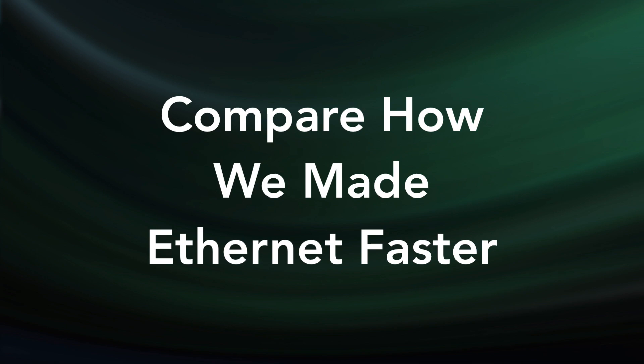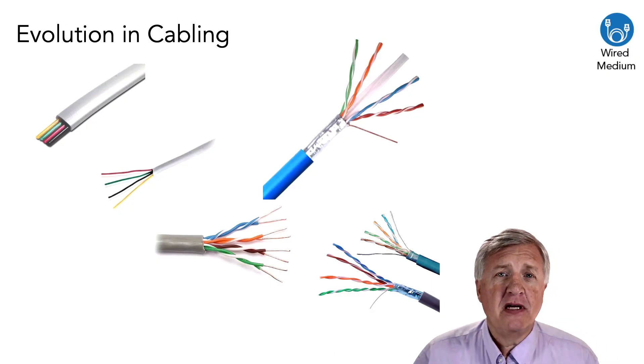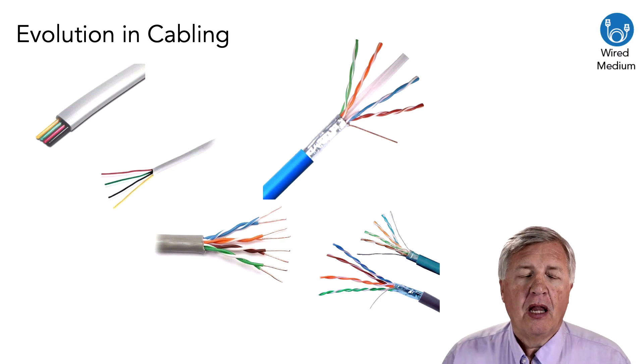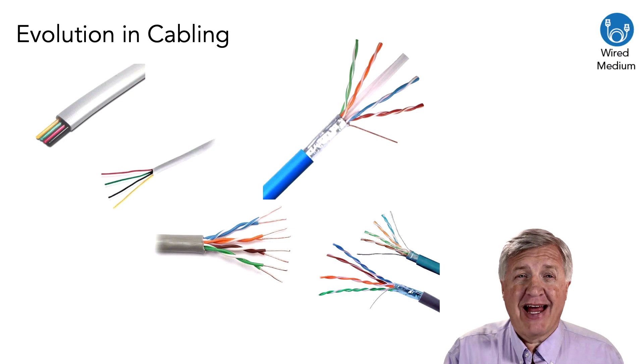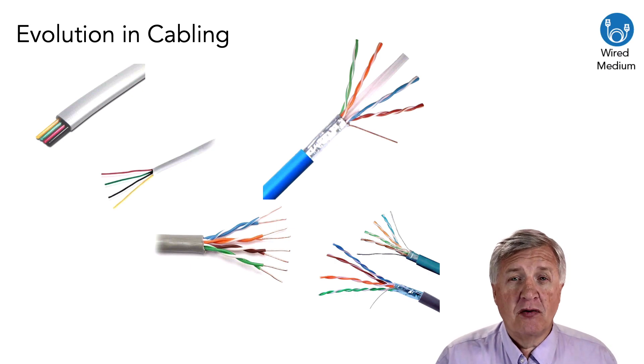If we look back at the evolution of cabling, a long time ago we used to have silver satin. That's what we called it. It was flat cable. It connected up telephones. It still had four conductors that ran copper.